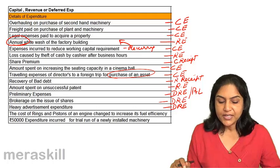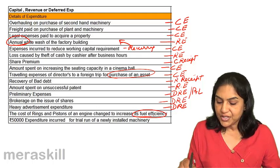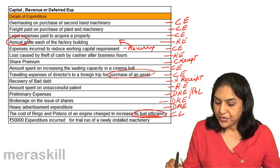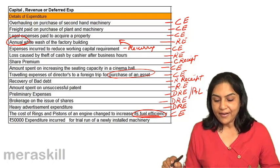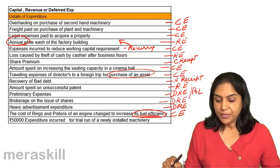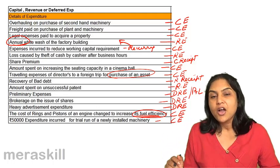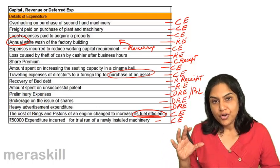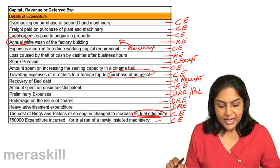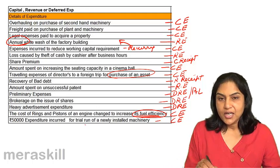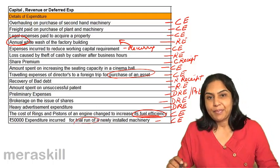The cost of rings and pistons of an engine changed to increase its fuel efficiency — if efficiency has been improved, it should be treated as a capital expenditure. Also, 50,000 expenditure incurred for the trial run of newly installed machinery would be a capital expenditure. Once the machine begins running, all expenditure on its normal functioning would be considered revenue. But initially, the first cost up to the point it is made functional, including the trial run, could be capitalized.